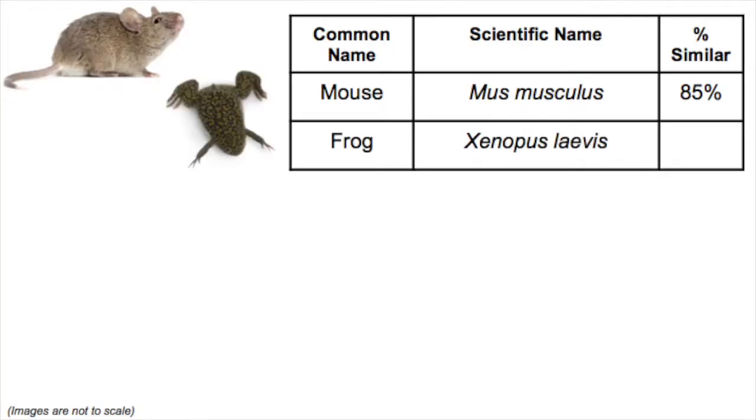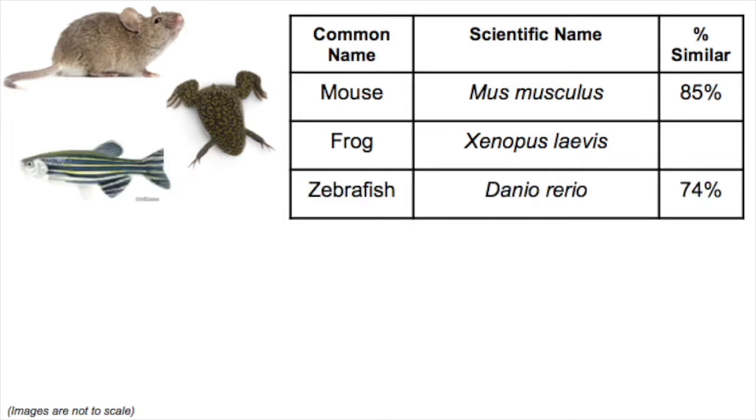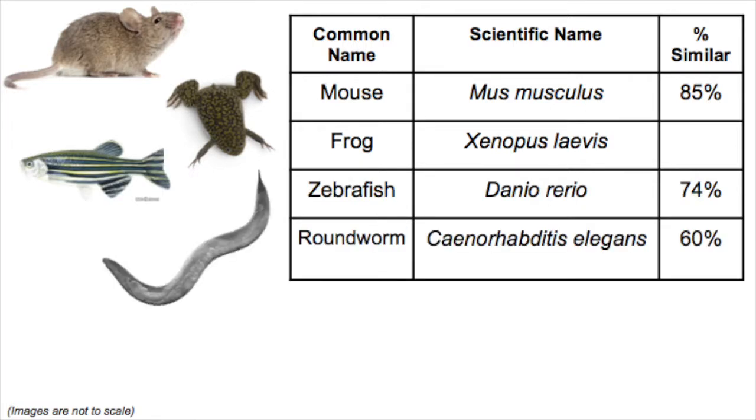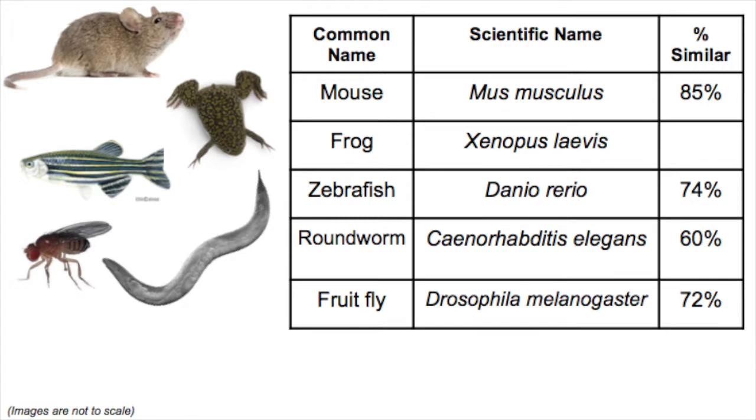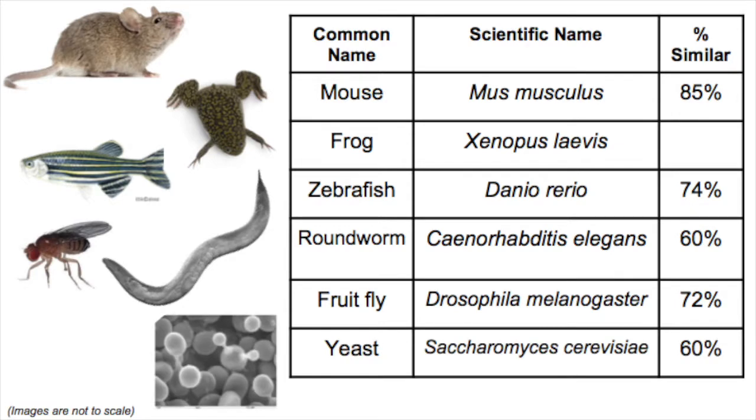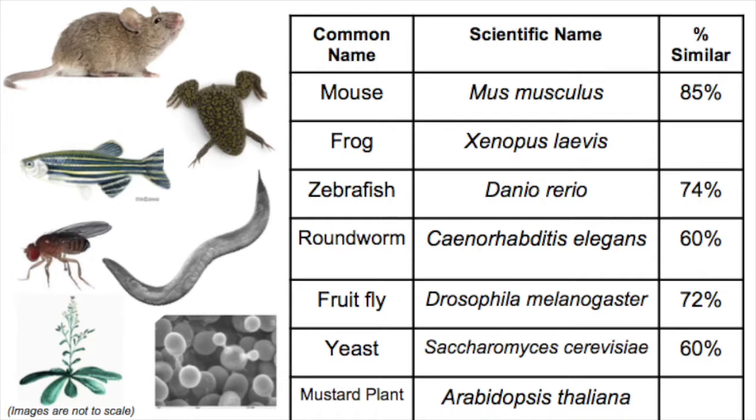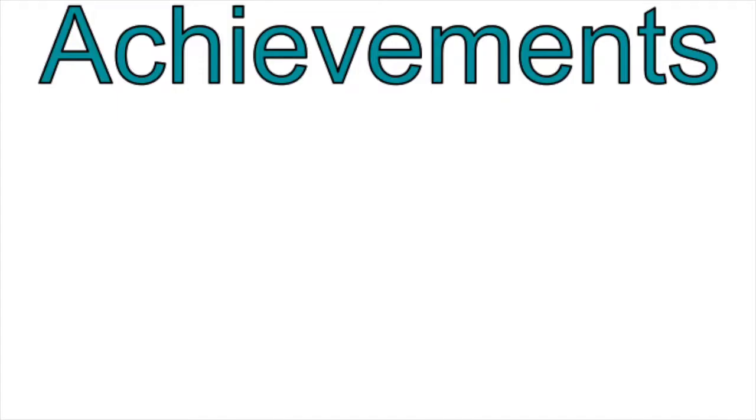Mus musculus, Xenopus laevis, Danio rerio, Caenorhabditis elegans, Drosophila melanogaster, Saccharomyces cerevisiae, and Arabidopsis thaliana are among the most popular in experimentation, and have produced some highly significant discoveries about humans.